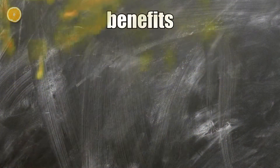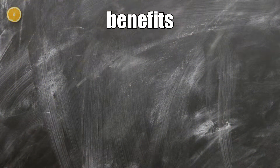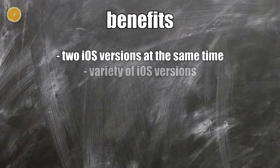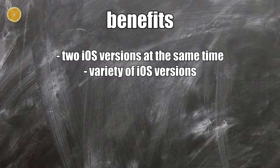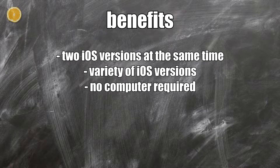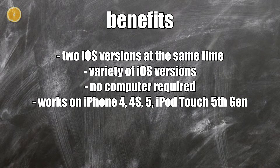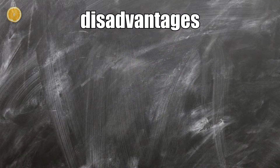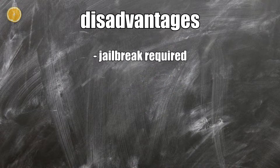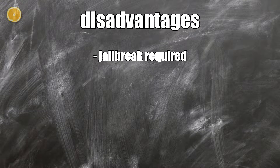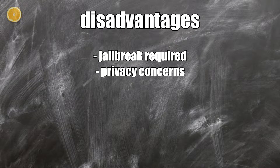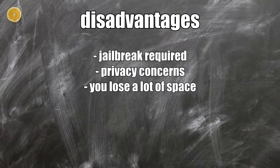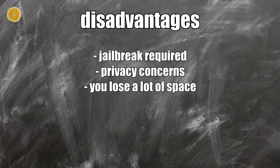The benefits: you can switch between the two operating systems, you can choose from nearly every iOS version available for that device, you don't need a computer, and as already mentioned, the iPhone 4, 4S, and 5 plus the iPod Touch 5th generation are supported. But on the other hand, you have to jailbreak your device, and this whole method surprisingly isn't Apple verified. And of course, nobody knows if your data will be sent to the KGB.